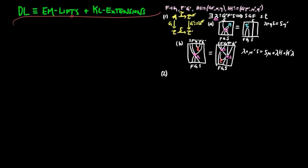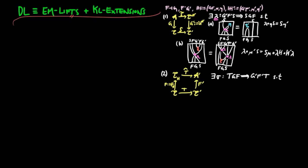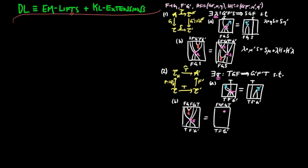And we restrict the general case of Kleisli extensions to the following form. Recall that if T̂ is a Kleisli extension of T along F and F', where F is the free functor for the Kleisli construction on the monad H, then there exists a natural transformation σ from TGF to G'F'T, such that conditions A and B hold.